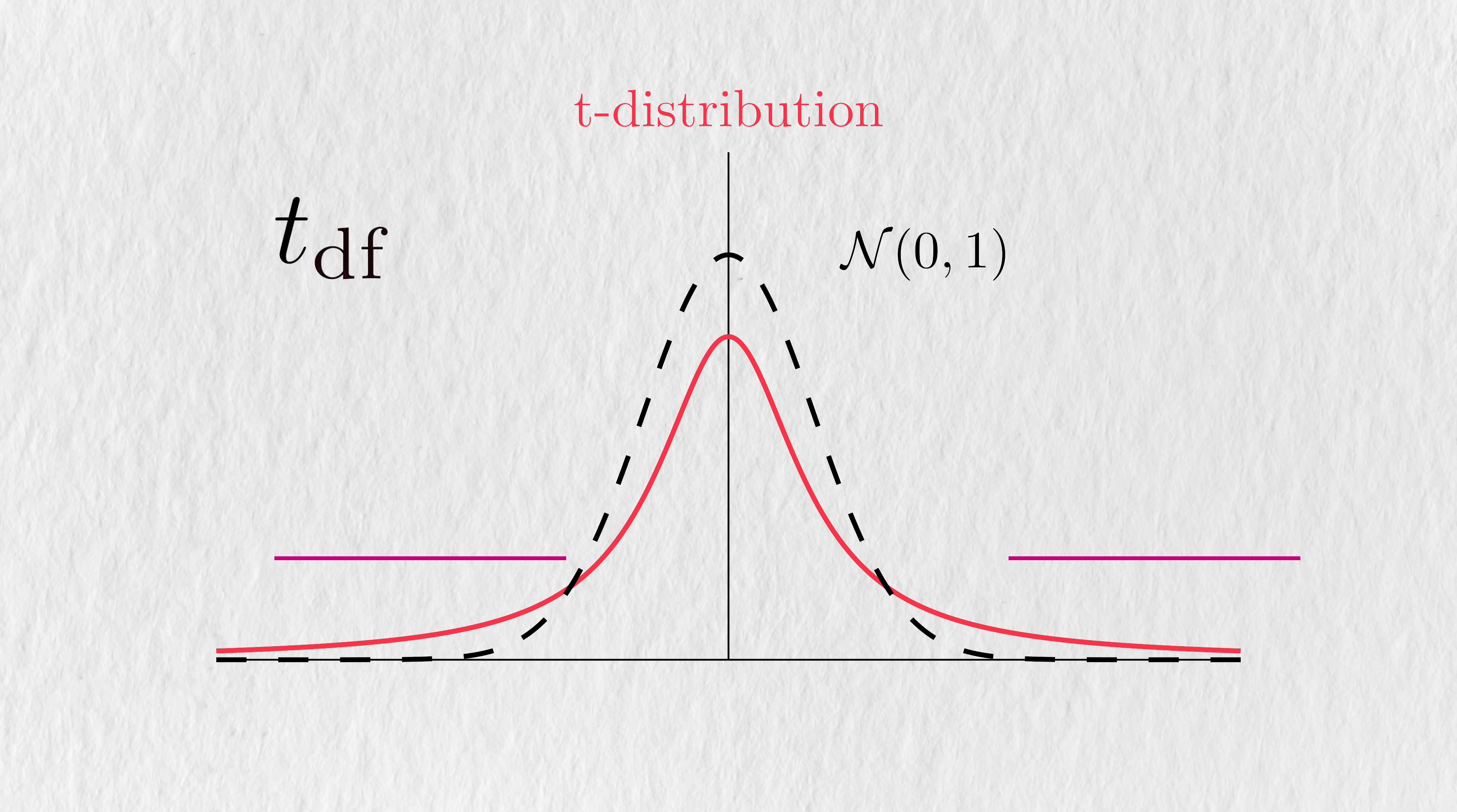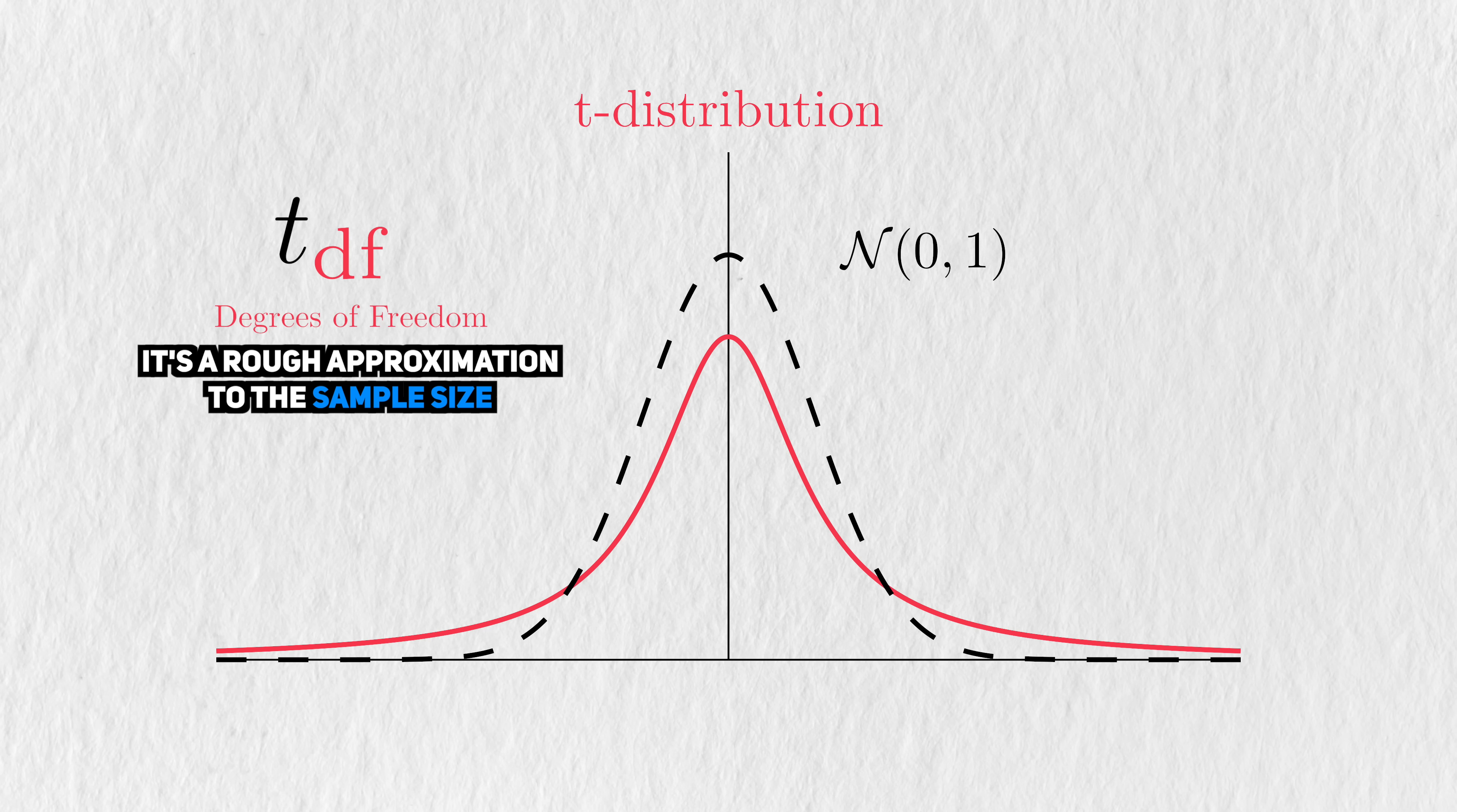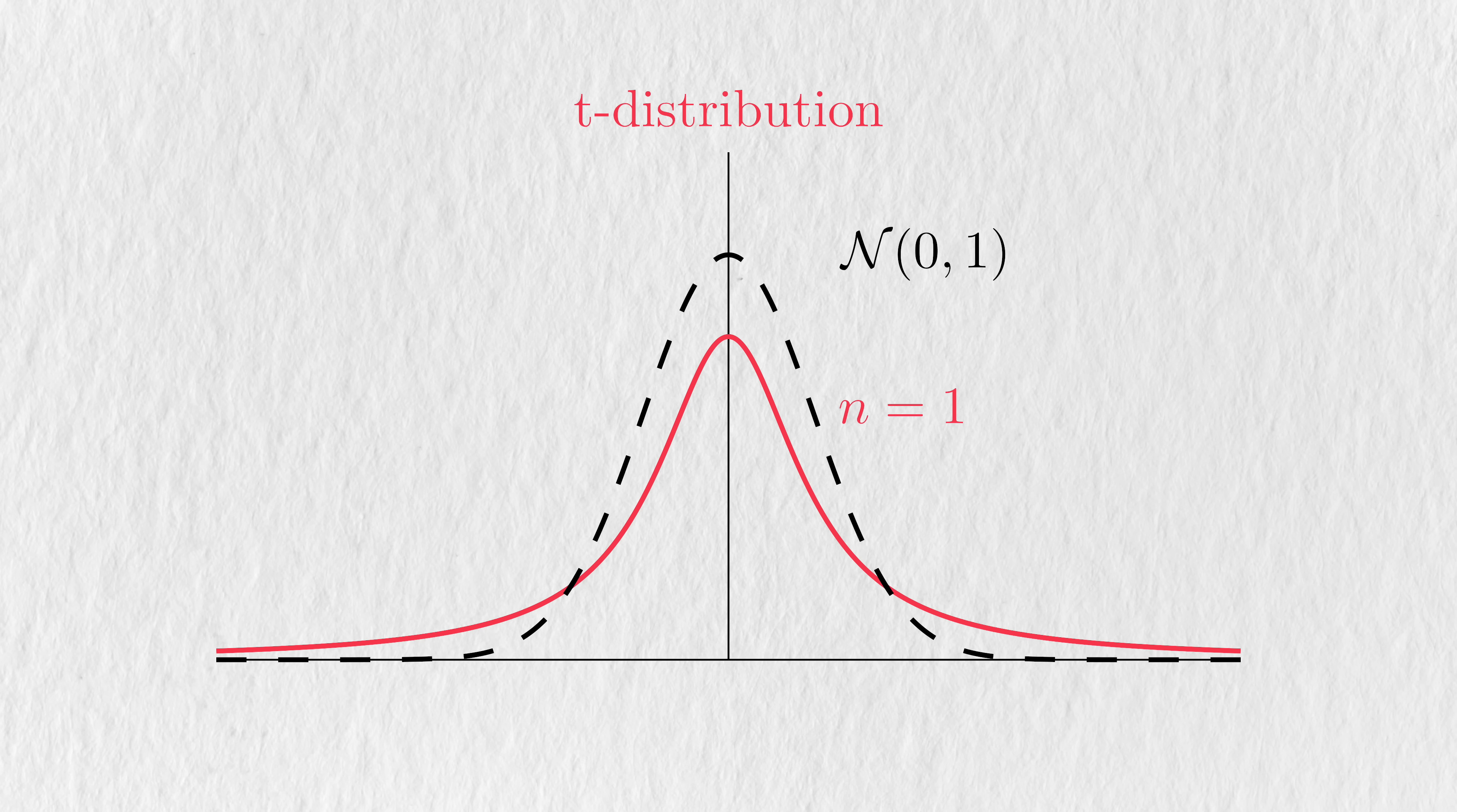The shape of a t-distribution is decided by a number called the degrees of freedom, one of the most infamous terms in statistics. While I won't get into it here, you can think of degrees of freedom as a rough approximation to how much data you've collected. What you're looking at is a t-distribution with one degree of freedom. As the degrees of freedom go to infinity, the t-distribution converges to the standard normal.